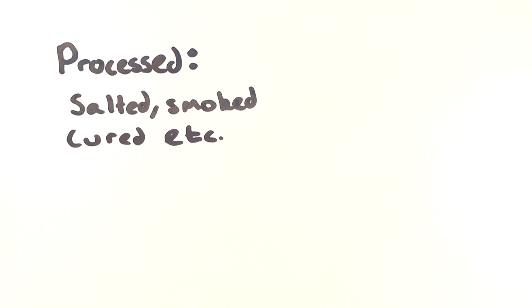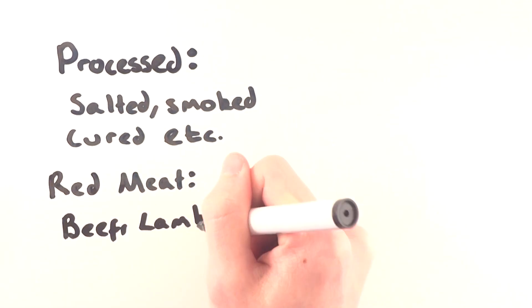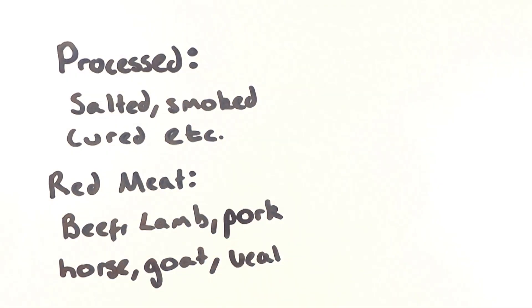This means things such as ham, corned beef, canned meat, bacon, pepperoni, sausages and so on are defined as processed meat, whereas mincing beef for example doesn't make it a processed meat. Red meat on the other hand means meat such as beef, lamb, pork, horse, goat, veal, or meats which were a dark red color before you cooked them.